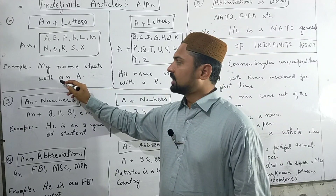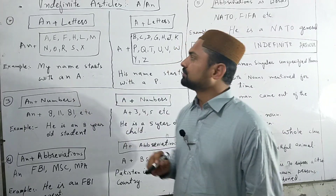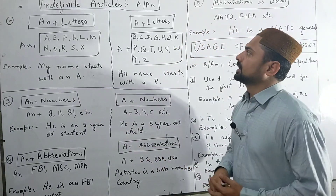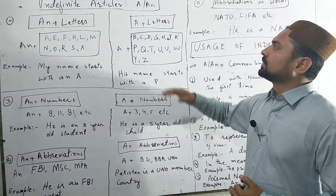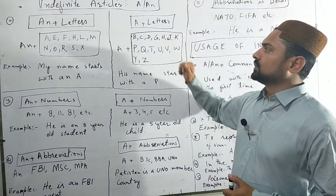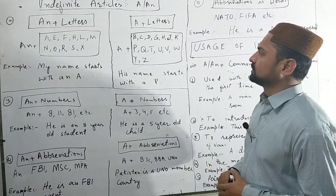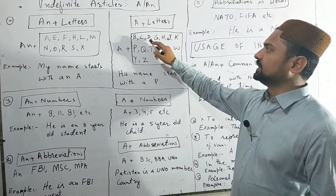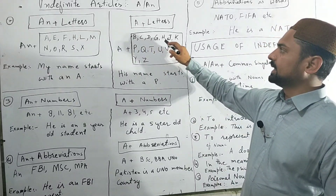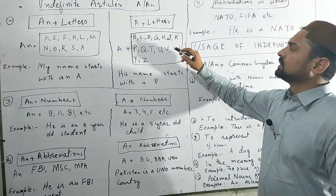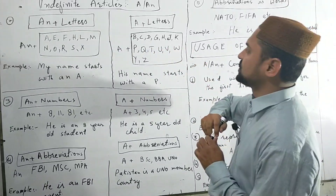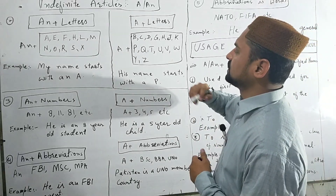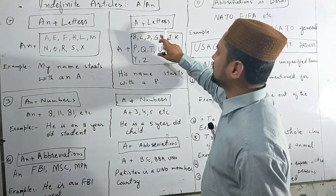Now, what about the consonant sound? Letters like B, C, D, G — and H when it is pronounced as a consonant — are consonant sounds. So the article A is used before these.